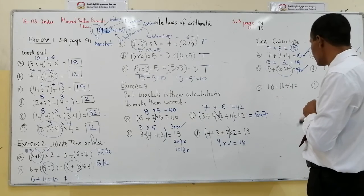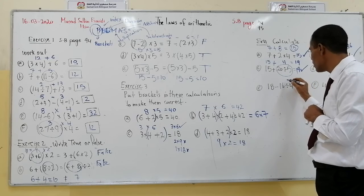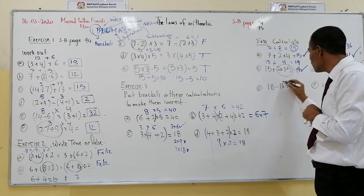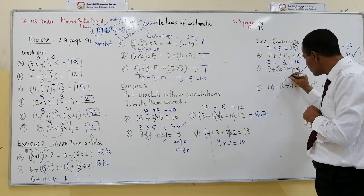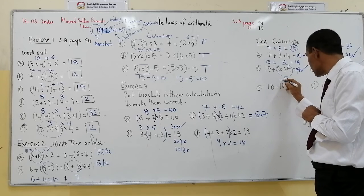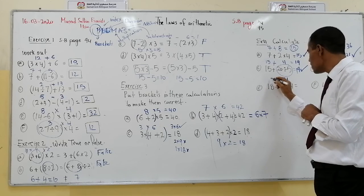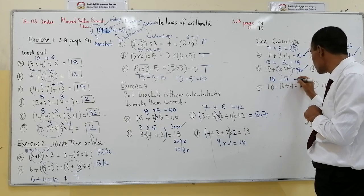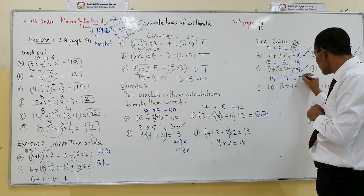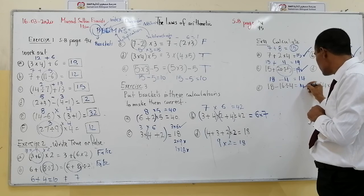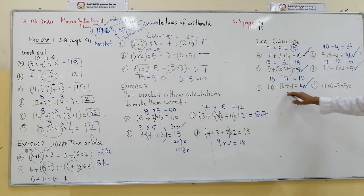Next: 18 minus 16 divided by 4. I will divide 16 by 4, which gives 4. Then 18 minus 4 is 14. The answer is 14.